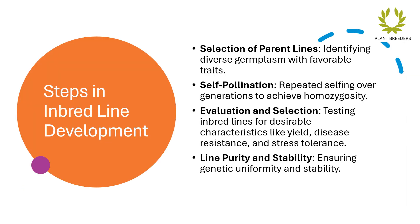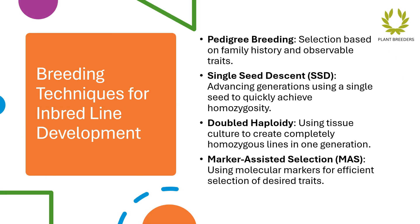Steps in inbred line development include: identifying diverse germplasm with favorable traits; repeated selfing over generations to achieve homozygosity; testing inbred lines for desirable characteristics like yield, disease resistance, and stress tolerance; and ensuring genetic uniformity and stability.